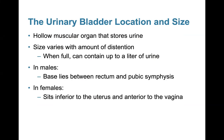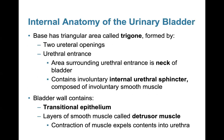The urinary bladder is a hollow muscular organ that stores urine. Its size varies with distension and when full can contain up to a liter of urine. In males, the base lies between the rectum and the pubic symphysis; in females, it sits inferior to the uterus and anterior to the vaginal tract. The base has a triangular area called the trigone, formed by the two ureteral openings and the urethral entrance. The neck of the bladder contains the involuntary internal urethral sphincter composed of smooth muscle. The bladder also contains transitional epithelium and layers of smooth muscle called the detrusor muscle, whose contraction expels contents into the urethra.